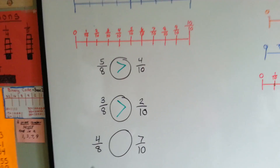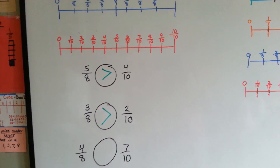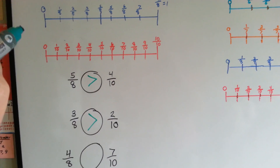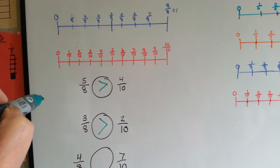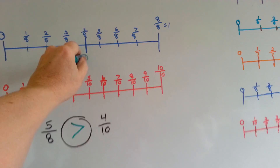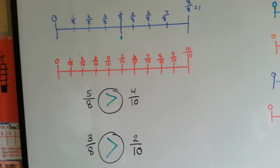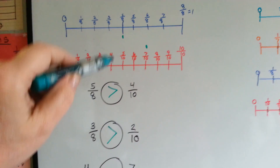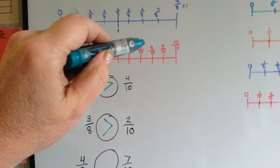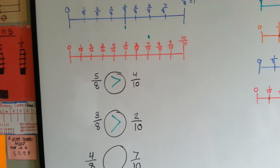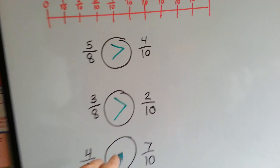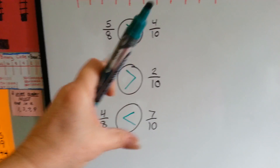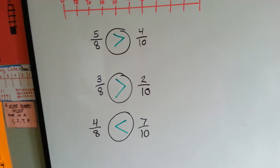Which one's bigger: 4 eighths or 7 tenths? Where's the 4 eighths? Well, 4 eighths is right here — it's half. Where's the 7 tenths? It's right here. So which is bigger, 4 eighths or 7 tenths? Which one is closer to the end? The 7 tenths is greater than 4 eighths. 4 eighths is less than 7 tenths. Big mouth eats big number.